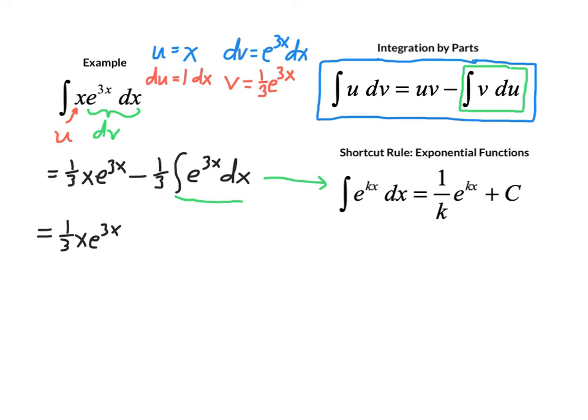So the integral of e to the 3x again is 1 third e to the 3x times my negative 1 third outside, gives us negative 1 ninth e to the 3x. And then we can put the plus c on at the end.